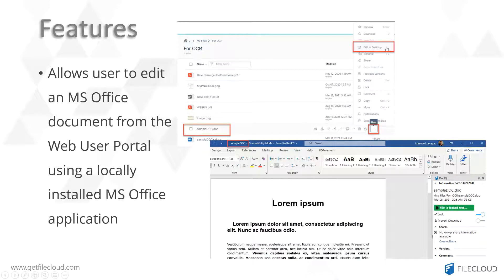When FileCloud Sync is running on the user's local machine, the user will be able to use the edit in desktop feature from the web user interface. This allows the user to directly edit an Office document using a Microsoft Office application without having an Office 365 account — they can just use their locally installed instance of Microsoft Office. I will show a demo of this one shortly.